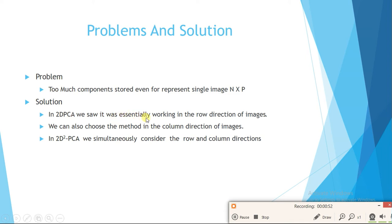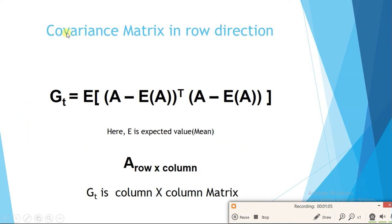In 2D PCA we were essentially working in the row direction of the image. We can also choose the column direction. In 2D Square PCA we simultaneously consider both row and column directions. For the covariance matrix G, we compute (image minus mean) transpose times (image minus mean) for all images, giving a column×column matrix. For the alternative method H, we compute (image minus mean) times (image minus mean) transpose, giving a row×row matrix.